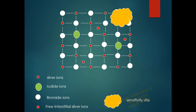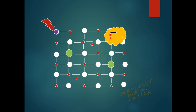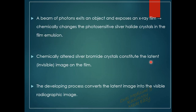Here is an animation showing the formation of the latent image. The silver ions and bromide ions are arranged in the crystal structure, with some iodide also present, along with the sensitivity sites. When an x-ray photon falls onto the emulsion, it releases one electron from the bromide ion, converting it to a bromine atom. The electron travels to the sensitivity site, imparting a negative charge. The negatively charged sensitivity site attracts the free interstitial silver ions, which combine with the electron to form neutral silver atoms — and the latent image is formed.